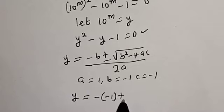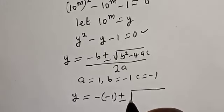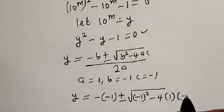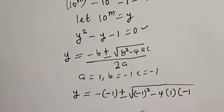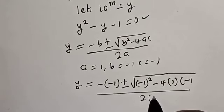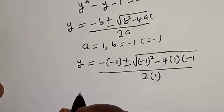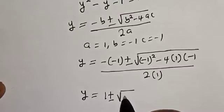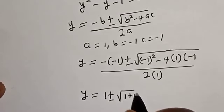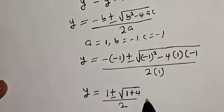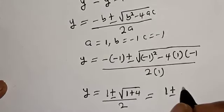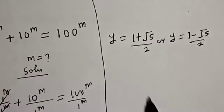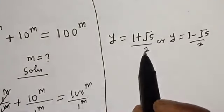Substituting, y equals 1 plus or minus the square root of 1 plus 4, all over 2. This is equal to 1 plus or minus the square root of 5, over 2. Therefore y equals (1 plus √5) over 2, or y equals (1 minus √5) over 2.